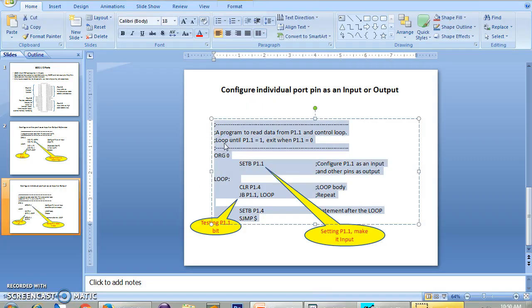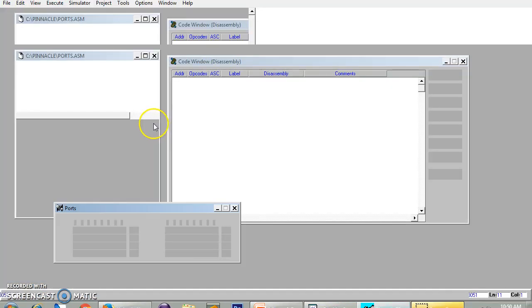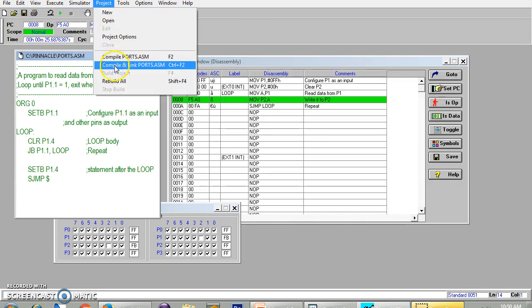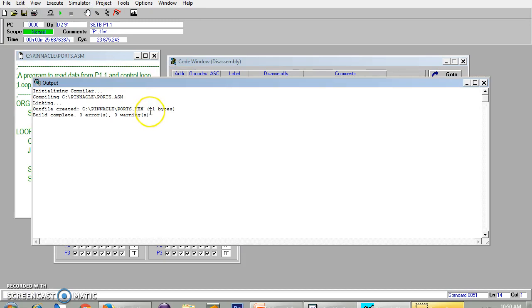Again, we will copy this program. Going to Pinnacle. I will save it. Then compile and link. 11 bytes of code size. No errors. No warnings.